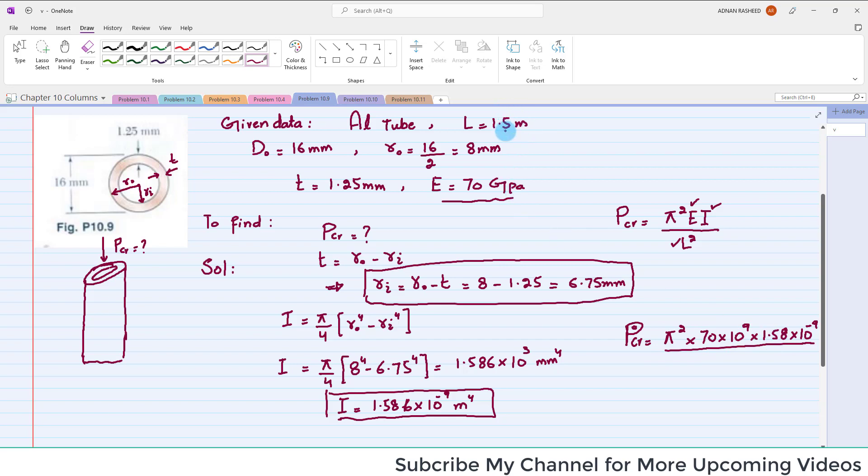L is 1.5 meters, so 1.5 meters squared. When you solve it, you will get the value of P critical.